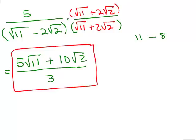So that's the trick: multiply the numerator and denominator by the conjugate of whatever's in the denominator. We'll do some more problems in the next video.